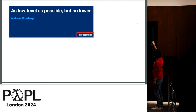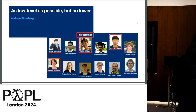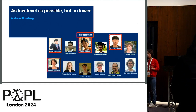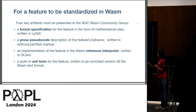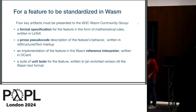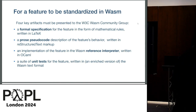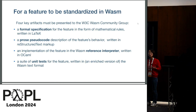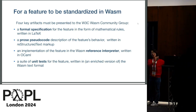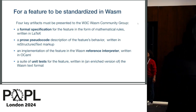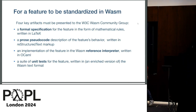As many of you already know, when you want to add something to the Wasm standard, you need to provide four artifacts. The first is a formal specification written in LaTeX, and the second — Andreas thinks this is the best, but developers may not think that way — is a prose pseudocode description, which Andreas usually calls COBOL style. Not only these two descriptions, but also you need to provide a reference interpreter in OCaml and a test suite for the feature. All four artifacts must be provided.